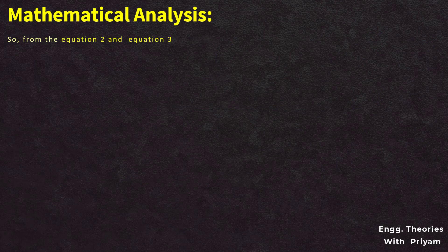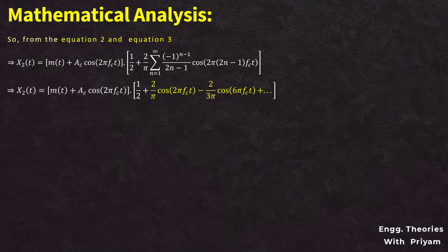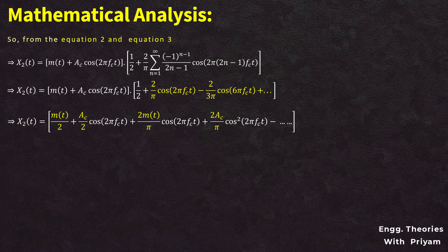From equations 2 and 3, substituting the values of x1(t) and p(t) into the equation for x2(t), x2(t) becomes [m(t) + Ac·cos(2π·fc·t)] multiplied by [1/2 + (2/π)·Σ((-1)^(n-1)/(2n-1))·cos(2π(2n-1)fc·t)]. Multiplying out, x2(t) = m(t)/2 + (Ac/2)·cos(2π·fc·t) + (2/π)·m(t)·cos(2π·fc·t) + (2Ac/π)·cos²(2π·fc·t) + higher-order terms. This is identified as equation number 5.